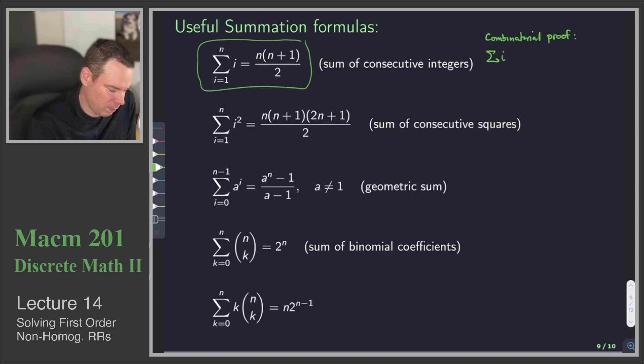The sum i equals 1 to n of i is just the number of edges in the complete graph on n plus 1 vertices. Think about how we can build the complete graph on n plus 1 vertices. I can start with the complete graph on 1 vertex. There are 0 edges.